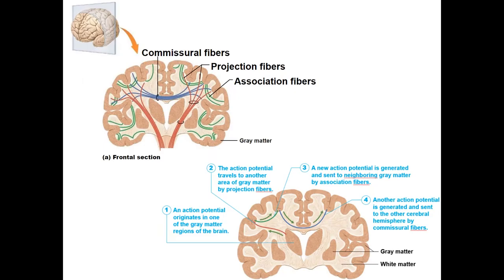The white matter inside the brain contains different types of nerve fibers. Projection fibers carry information from the spinal cord and peripheral nervous system up into the brain. Commissural fibers allow the two hemispheres to communicate with one another. Association fibers allow different regions within the same hemisphere to communicate and aid each other in different functions.